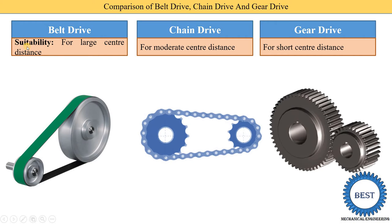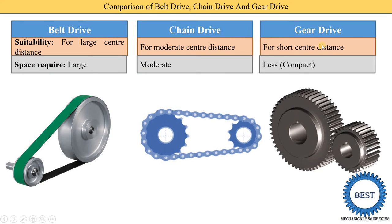Belt drive is suitable for large center distance — when the center distance between the driving and driven shaft is larger, we use the belt drive. Chain drive is suitable for moderate center distance up to 3 meters; when the center distance is 3 meters or less, we use chain drives. Gear drive is used where the center distance is very short.